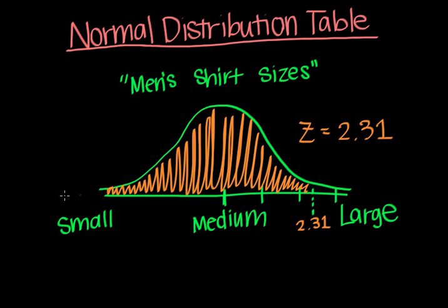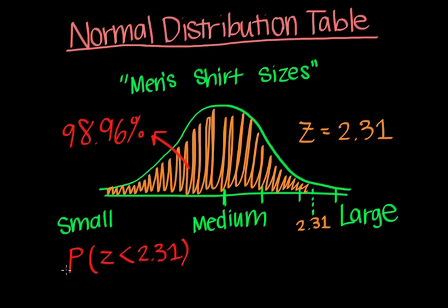Based on the table, we found that the area under the curve was 98.96% of the entire area under the curve. But this number right here is also a probability. Essentially, we found the probability that a random person on the street has a shirt size smaller than Leonardo DiCaprio. And this is denoted as P(z is less than 2.31), because we're finding the probability of z-scores that are less than 2.31 or the z-score of Leonardo DiCaprio's shirt size.